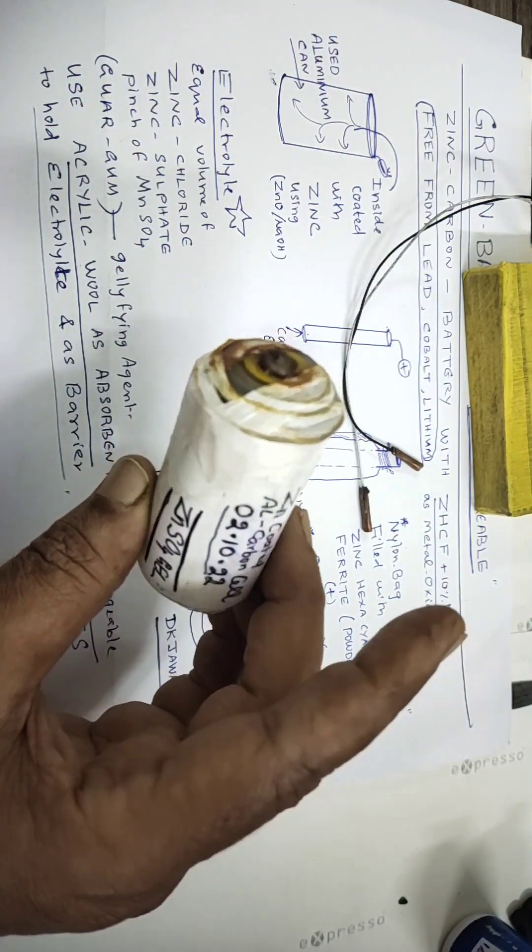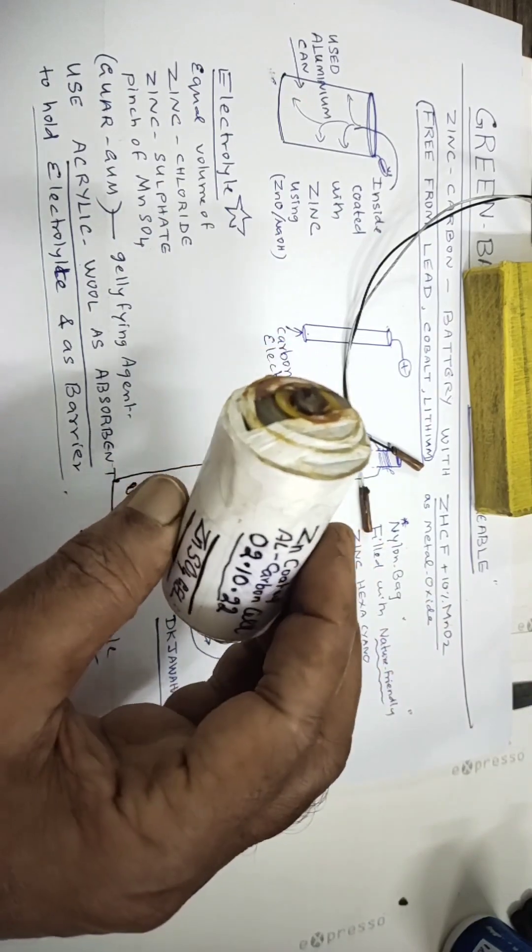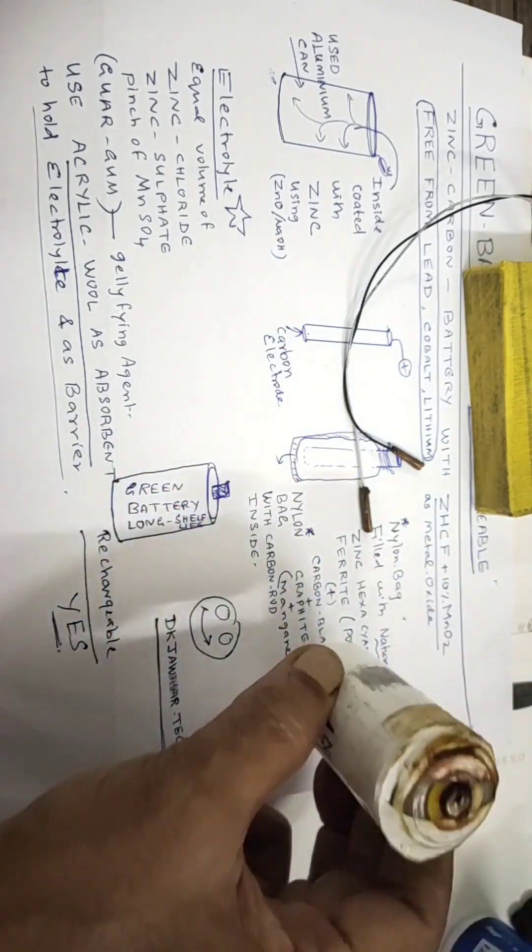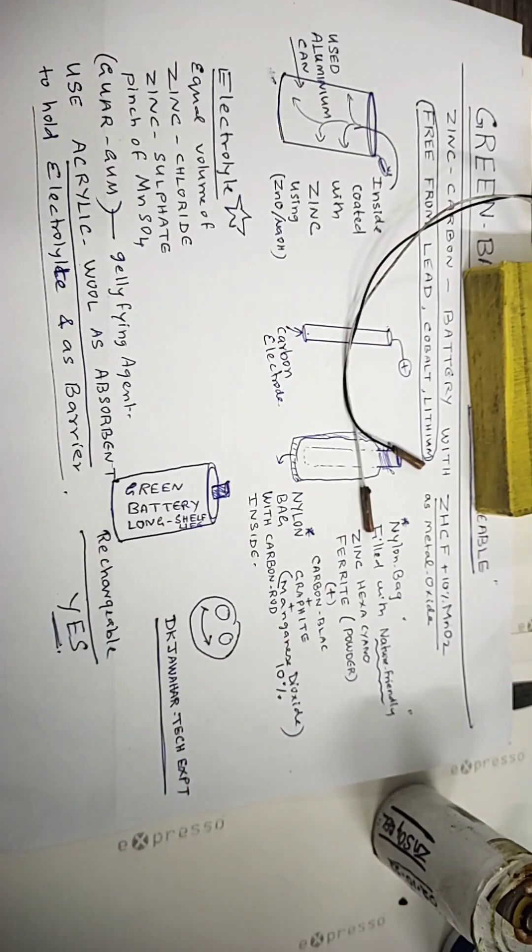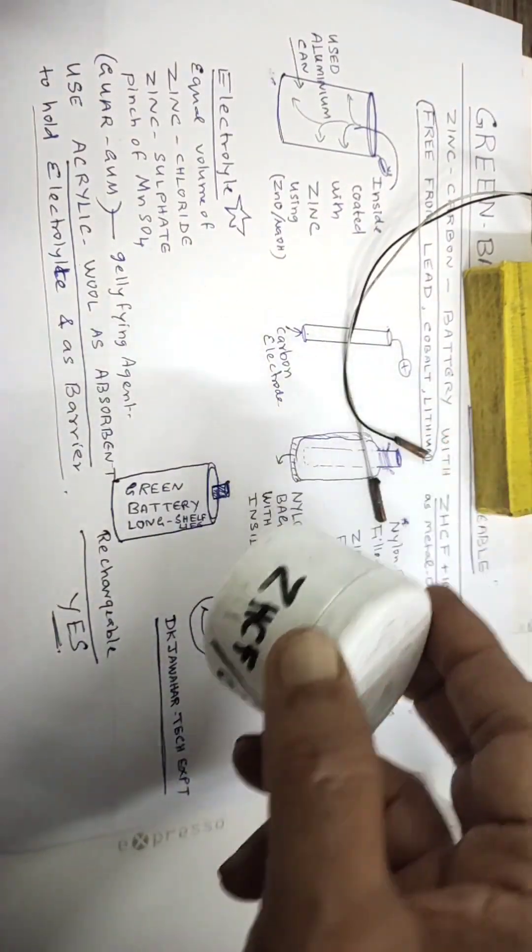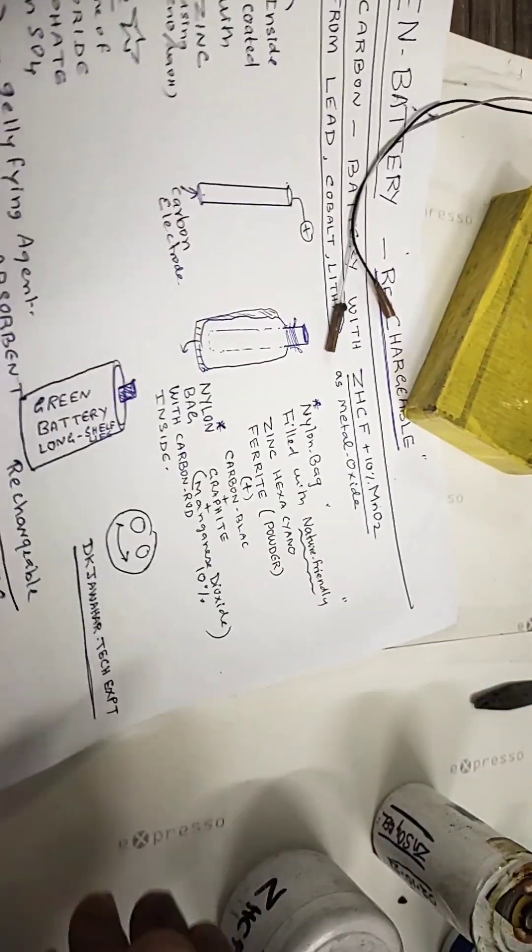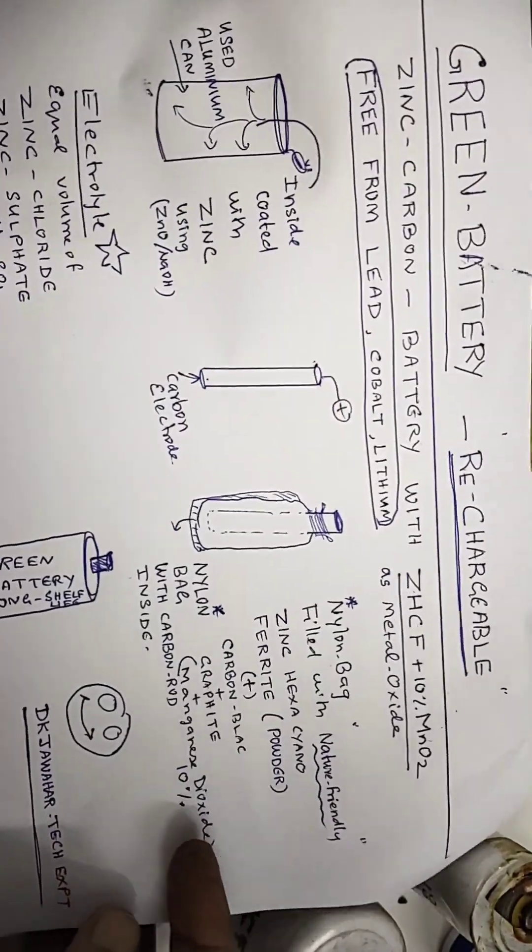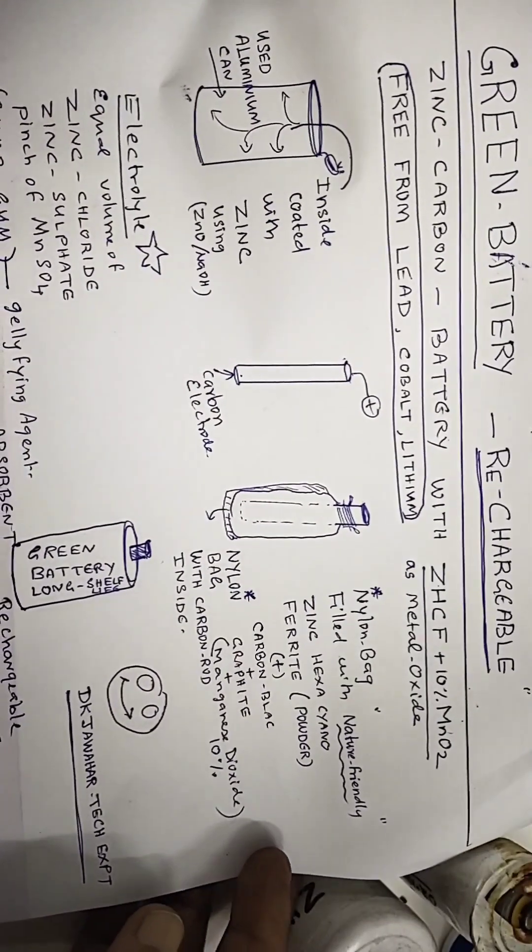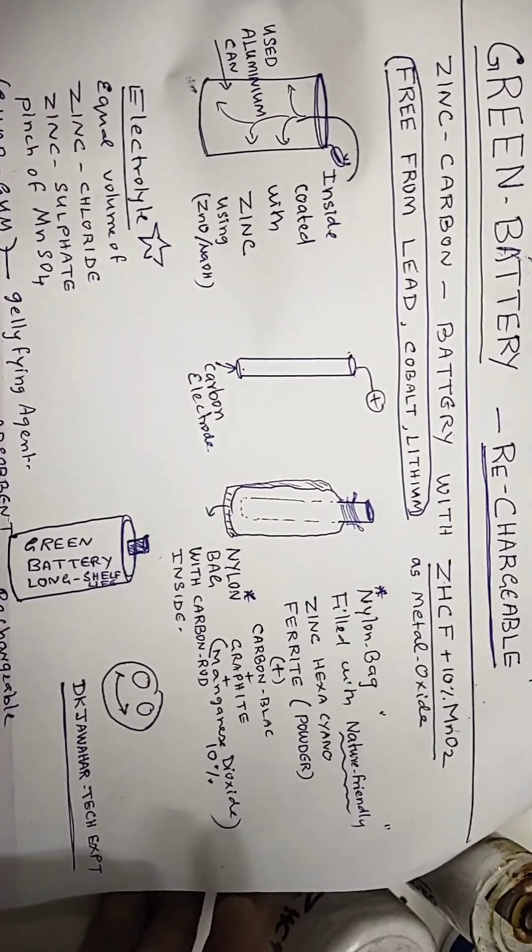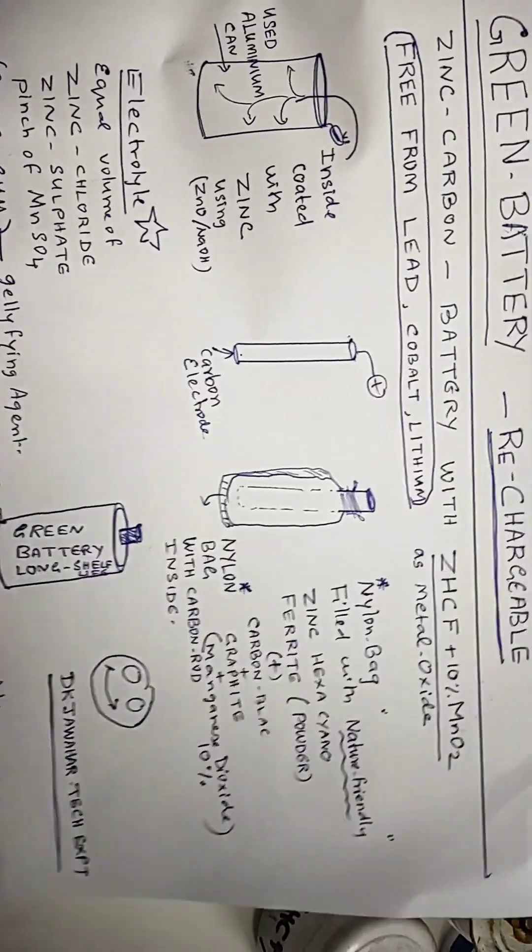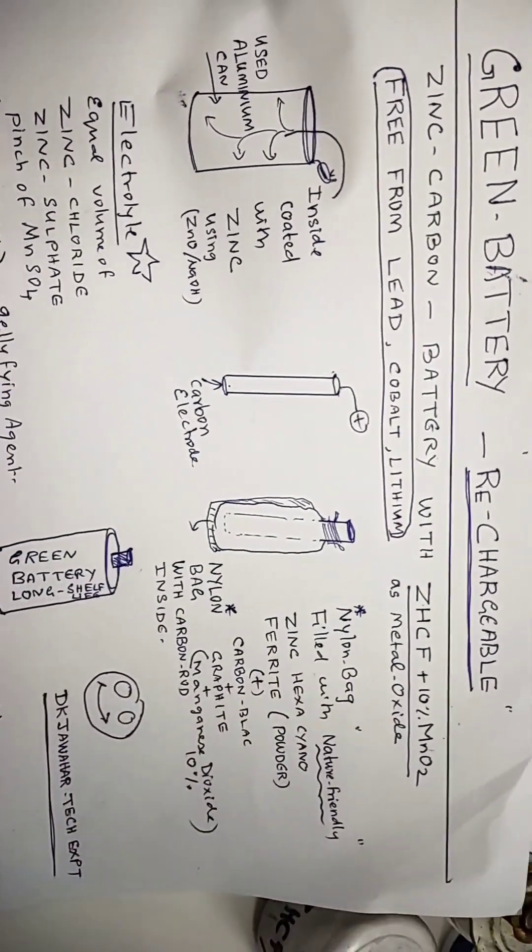This is what we saw in the previous session. Now I will show you how to prepare similar batteries. Instead of adding metal oxide powder, the major amount will be zinc hexacyanoferrite. I'll later show you how to prepare zinc hexacyanoferrite in my next session.